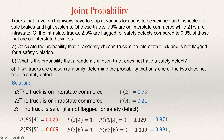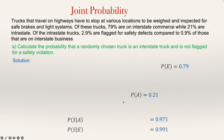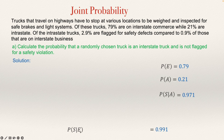So this is the information we need to see from the problem. Now let's apply this to answer the questions. Question A: calculate the probability that a randomly selected truck is not flagged for a safety violation and is on interstate business. To get the solution, we have: P(E) = 0.79, P(A) = 0.21, P(safe | A) = 0.971, and P(safe | E) = 0.991.